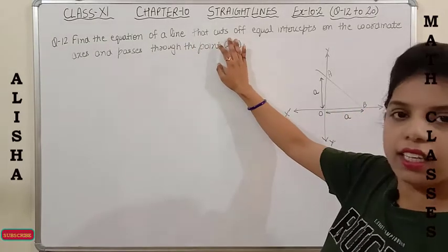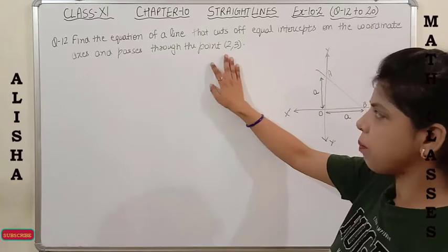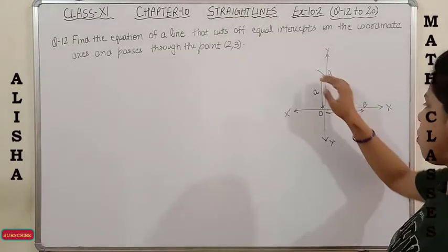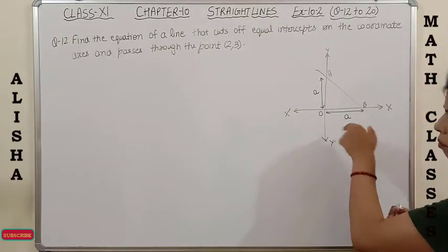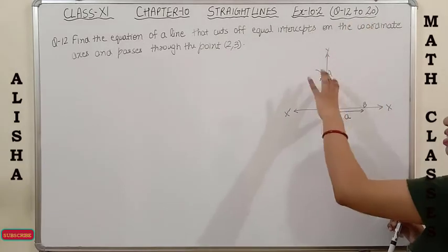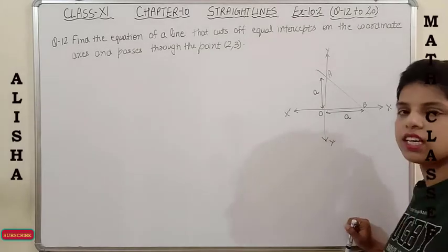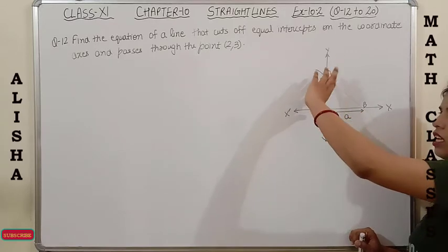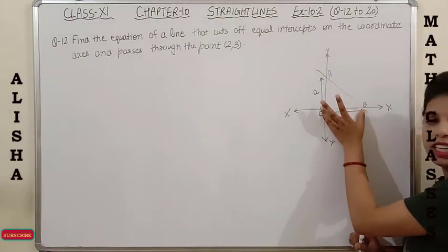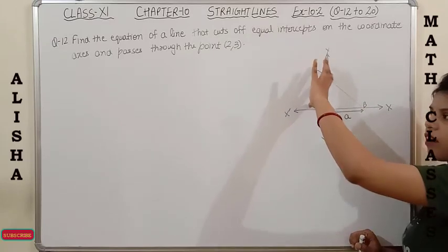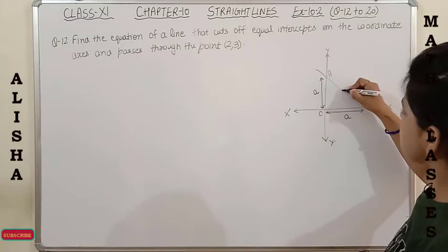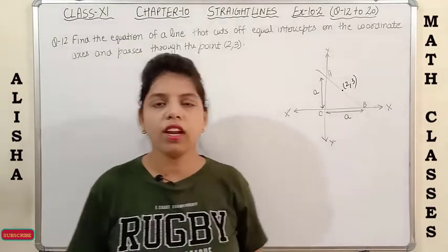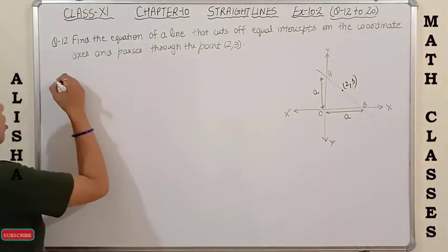Question 12: Find the equation of a line that cuts equal intercepts on the coordinate axes and passes through the point (2, 3). I have drawn a figure — AB is a line, and equal intercepts means if it cuts the x-axis at three units, it also cuts the y-axis at three units. Since intercepts are given, we will use the equation of line in intercept form.